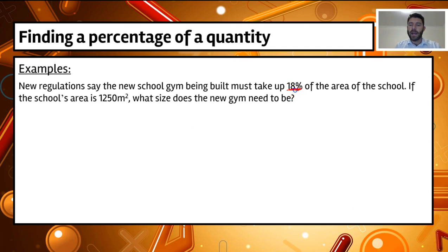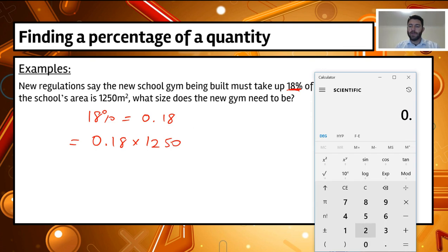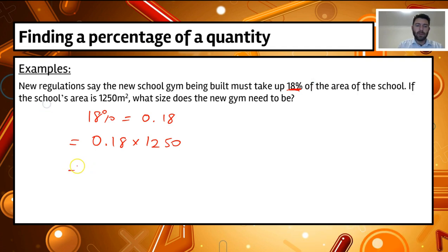We need to work out, what is 18% of 1250? So 18% actually equals 0.18, if we move that two decimal places. Therefore, the new gym area needs to be 0.18 multiplied by 1250, which equals 225 square metres.